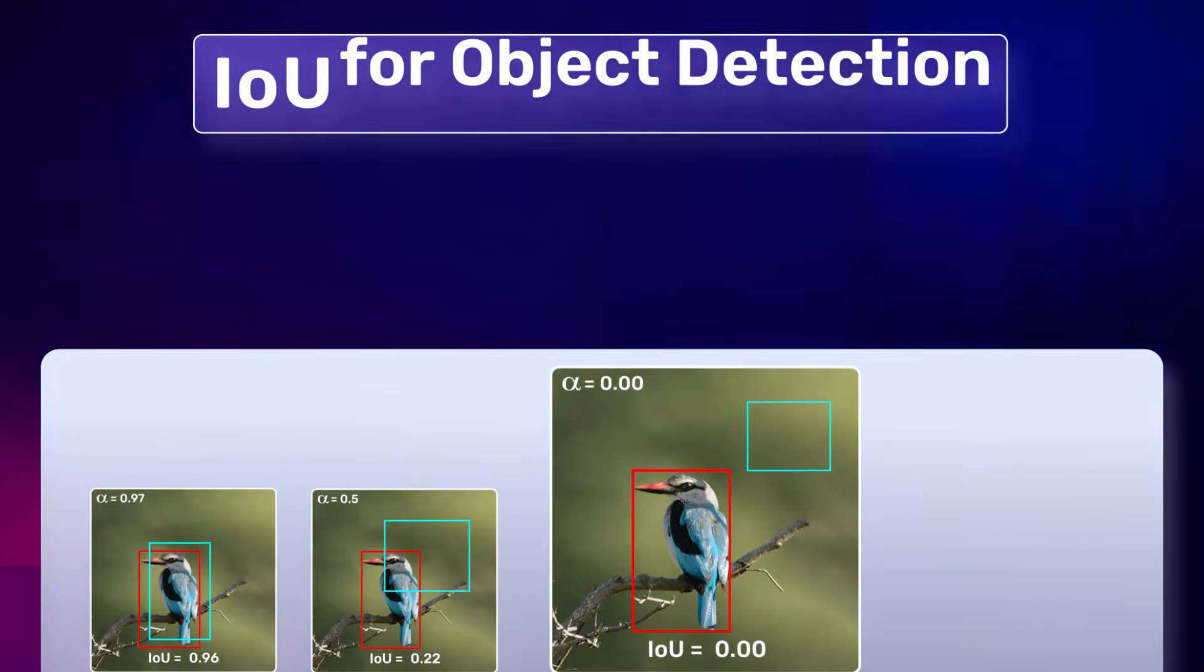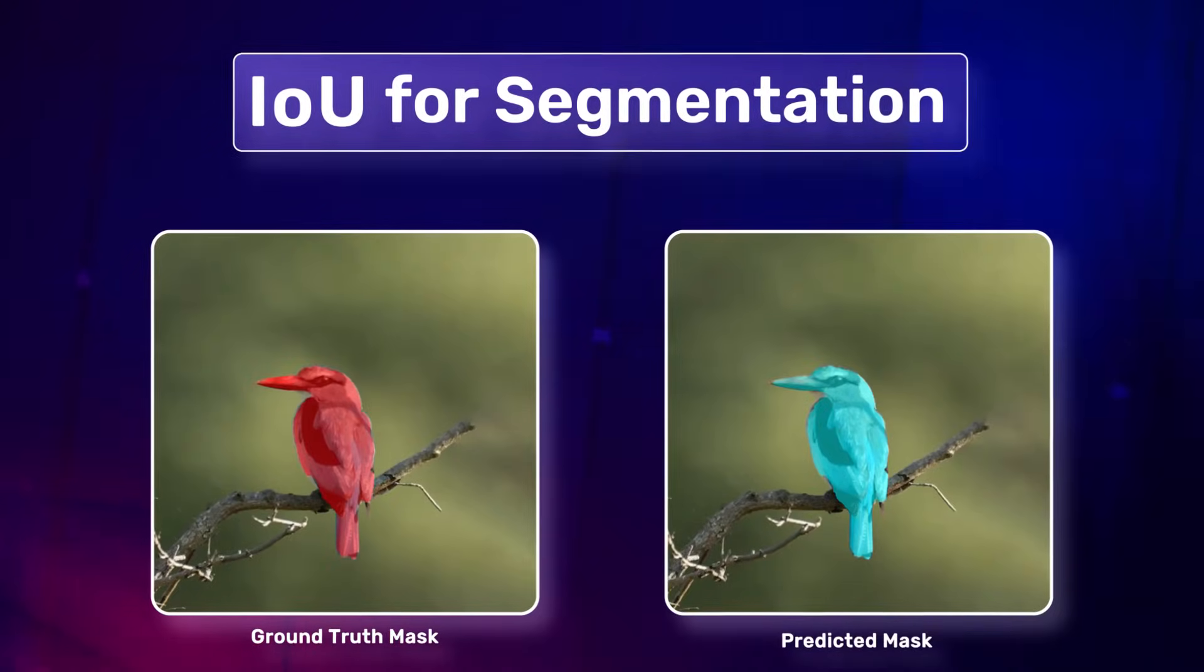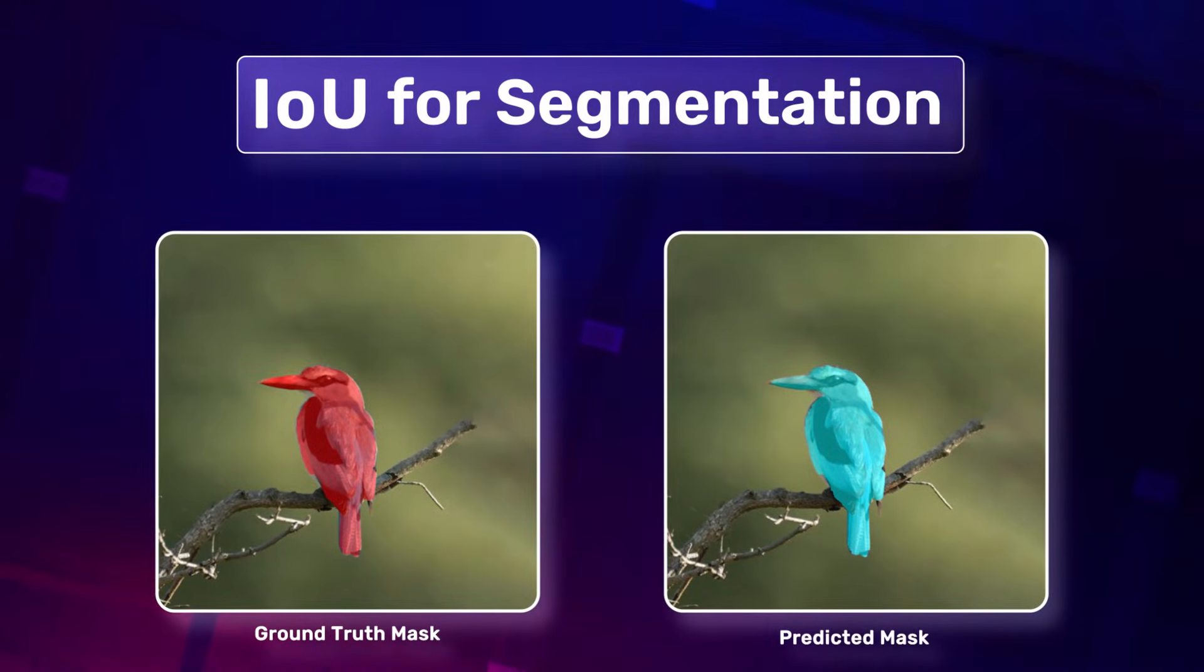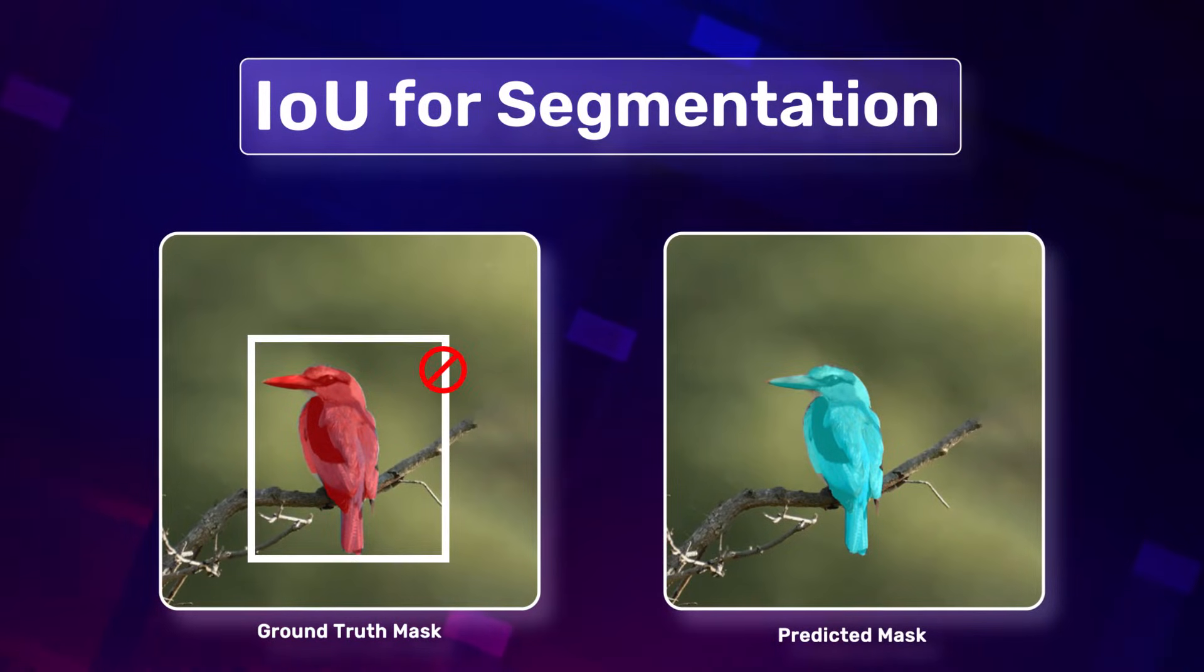Let's move on to IoU for segmentation. It serves as a primary metric to evaluate model accuracy. Have a look at the visualization shown on screen. In the case of image segmentation, the area is not necessarily rectangular.